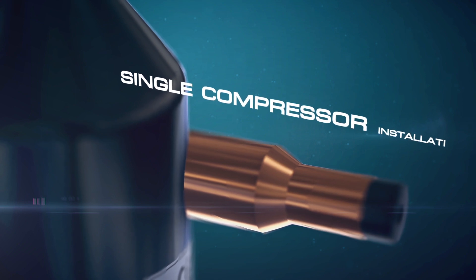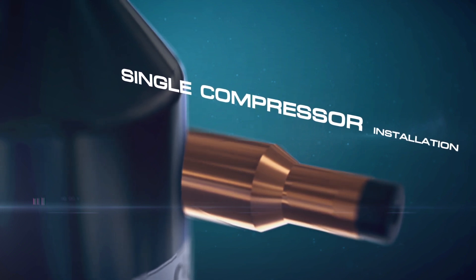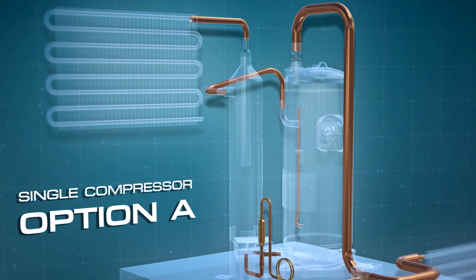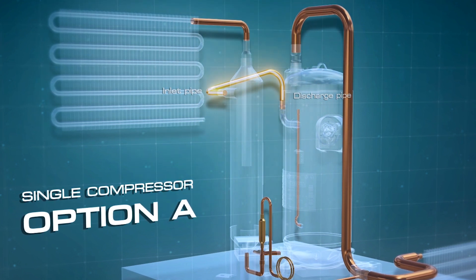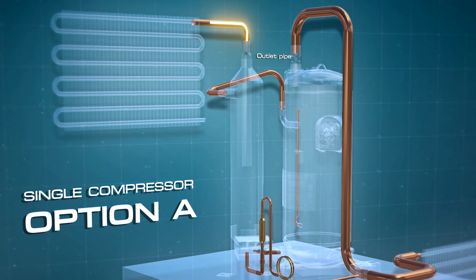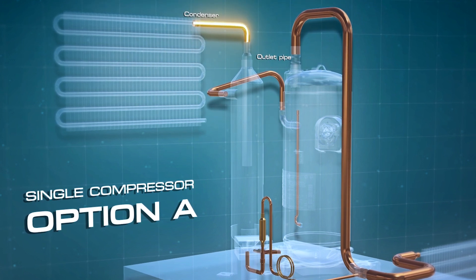The single compressor installation procedure is as follows: First, connect the compressor's discharge pipe to the oil separator's inlet pipe and connect the oil separator's outlet pipe to the condenser.